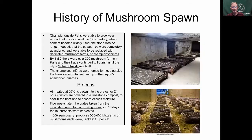Throughout the 19th century, when they stopped using the catacombs, the champignon de Paris were being grown year-round. By 1880 there were 300 little mushroom farms in Paris — rooms of about 30 by 30 meters, a thousand square meters — producing about 300 kilograms of mushrooms every week. The process is very similar to what we use today, though we don't use catacombs.